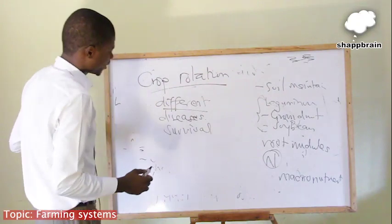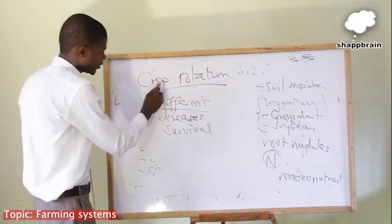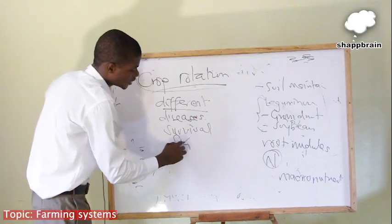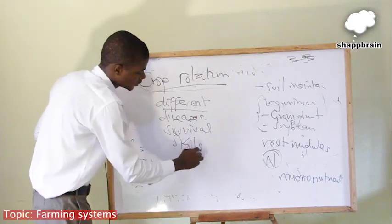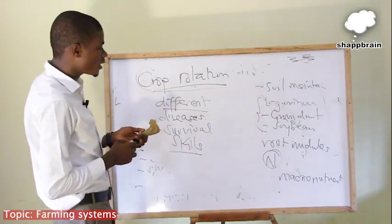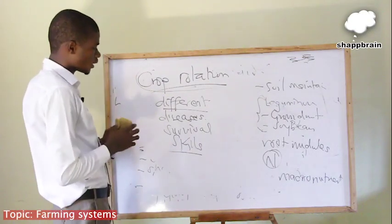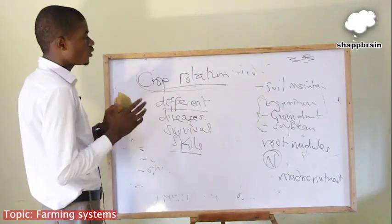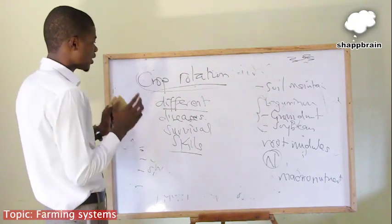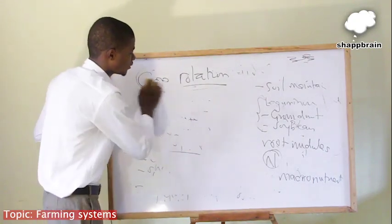But crop rotation also has some disadvantages. One of the disadvantages is that it requires skills. The farmer needs to be adequately informed about how to plan this rotation program in order to have a very successful crop rotation cycle.